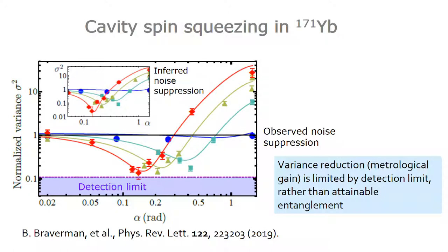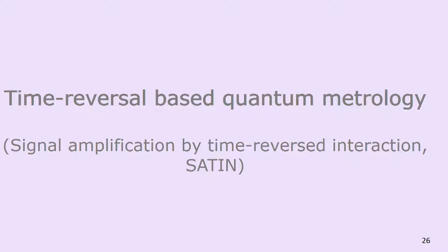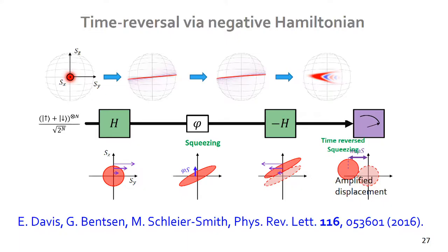Our variance reduction was limited really by the detection limit rather than the attainable entanglement, so we asked ourselves what can we do better. This brings us to the concept of time reversal-based quantum metrology — we call it signal amplification by time reversed interaction, or SATIN. This goes back to a proposal by Monika Schleier-Smith's group. If you have the one-axis twisting Hamiltonian, start with a coherent state along the x-axis, apply the Hamiltonian to make a spin squeezed state, then apply a displacement phi along this direction — if the displacement is larger than the width of the state, the resulting state is orthogonal to the original. If you then switch the sign of the Hamiltonian and evolve backward with minus H, you get a state with a displacement much larger than the small phase shift you applied.